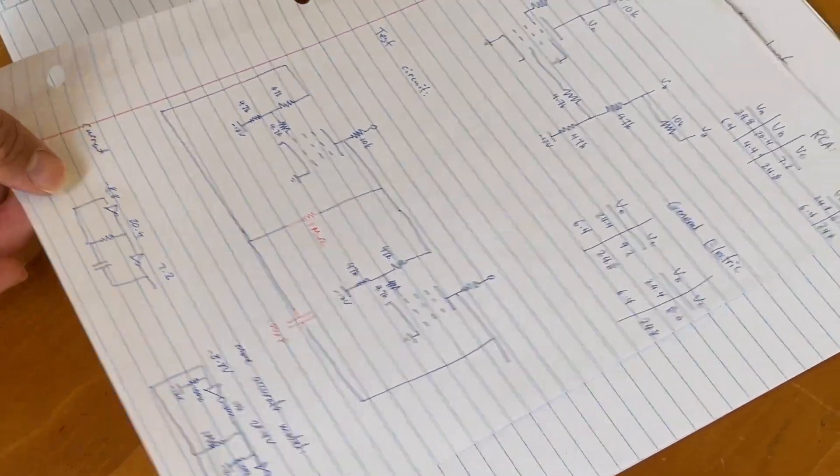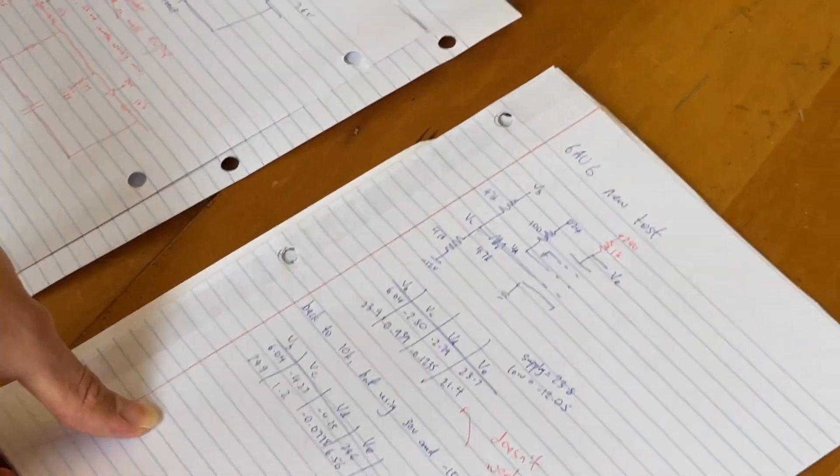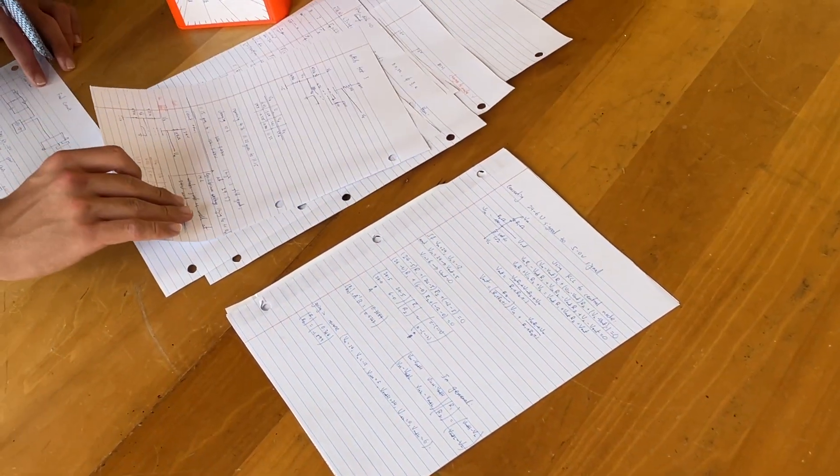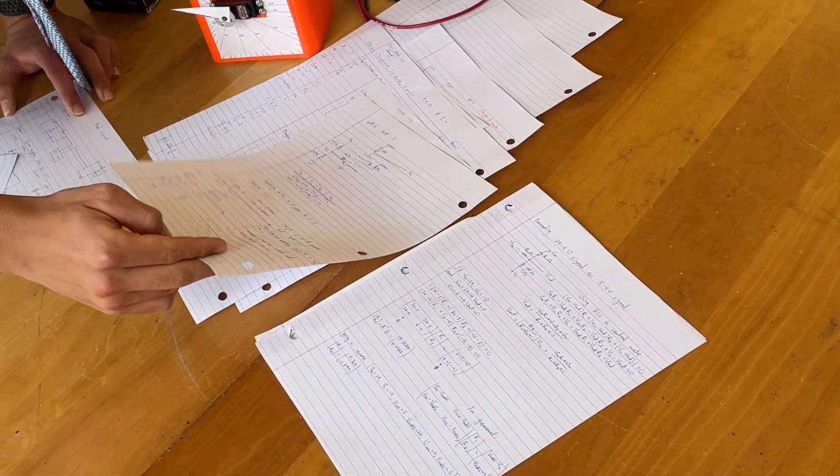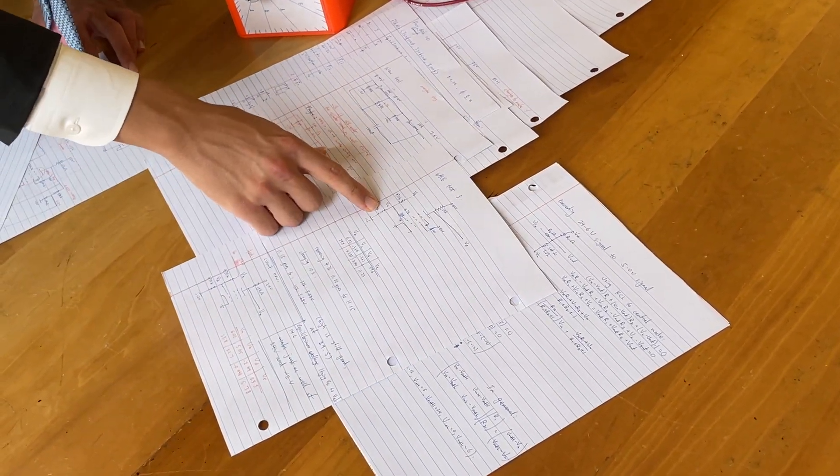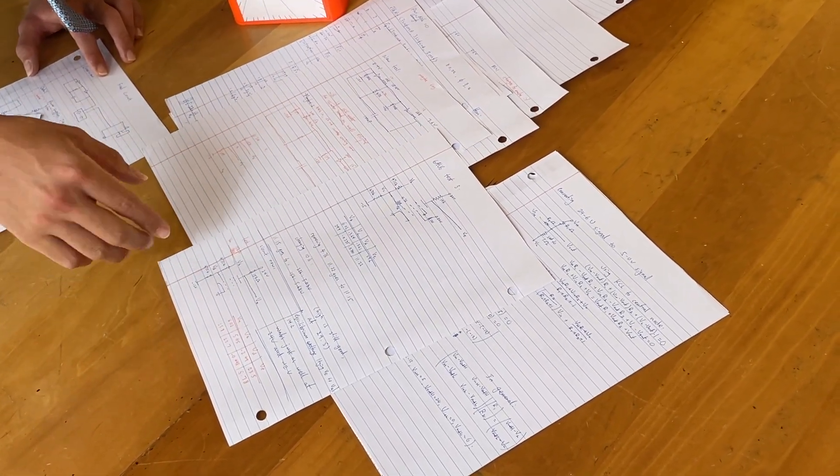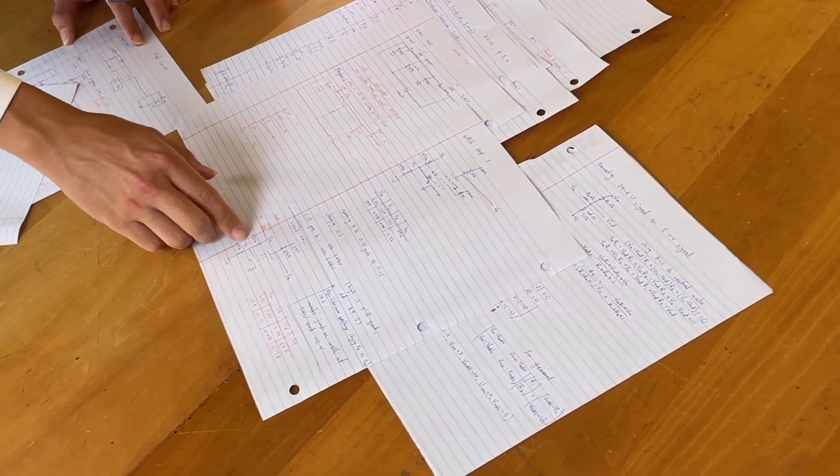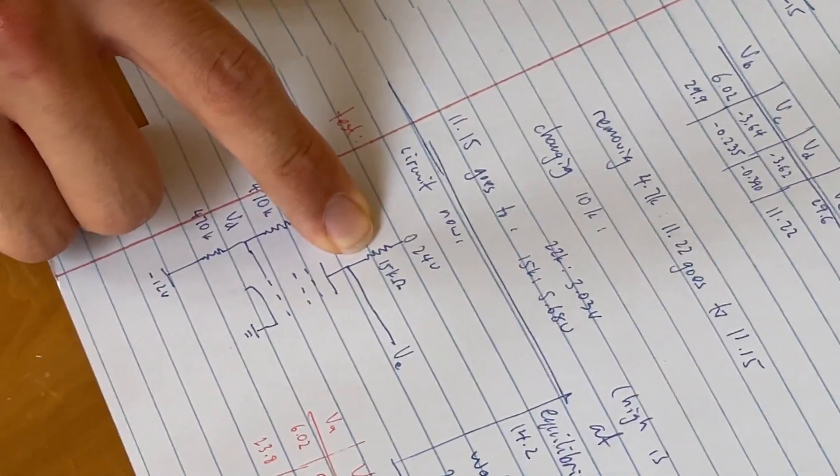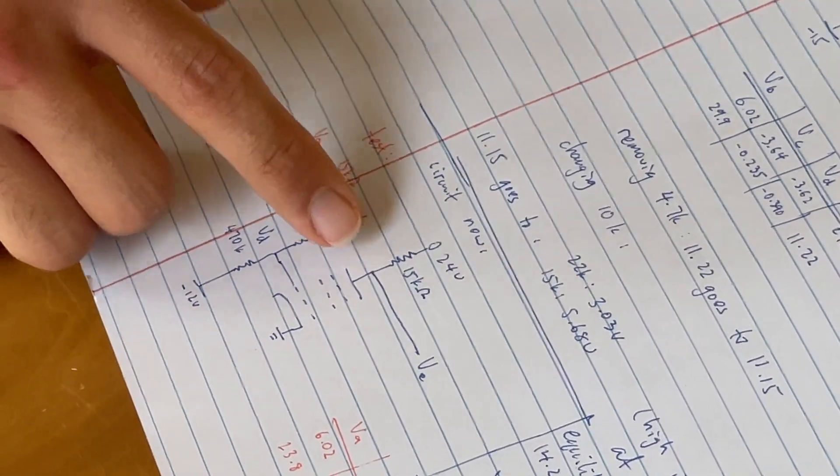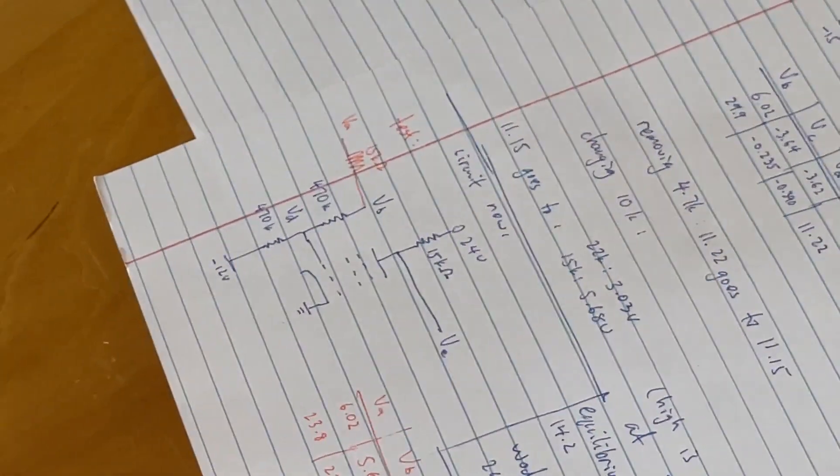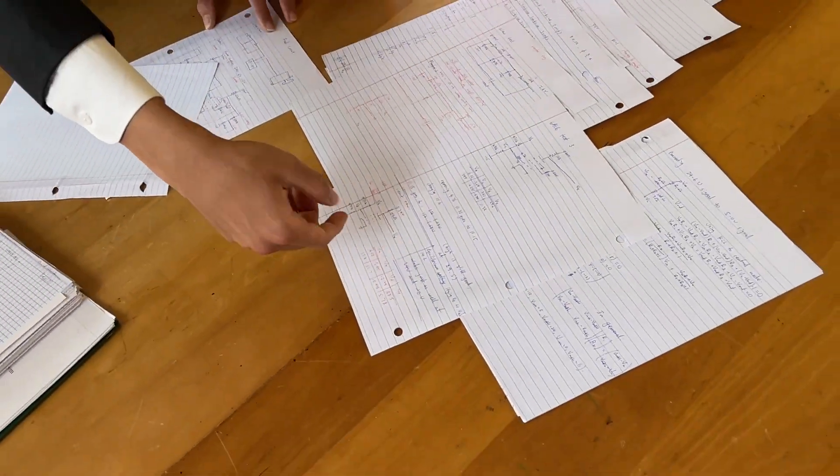So then once I realized that, I focused on trying to maximize input resistance while minimizing output resistance. And eventually the perfect balance that I stumbled upon is about one mega ohm on the input and 15 kilo ohms on the output. And that means you can chain the inverters together and they would still work with each other and the voltages all work out.